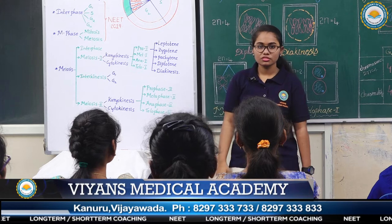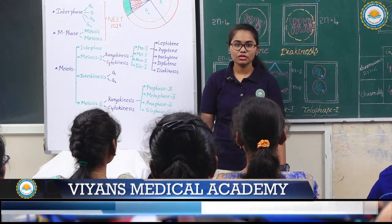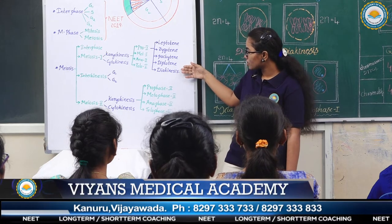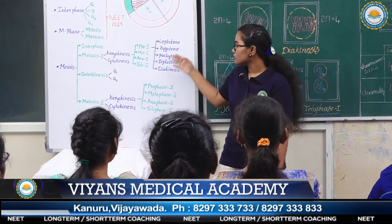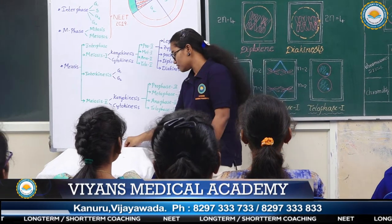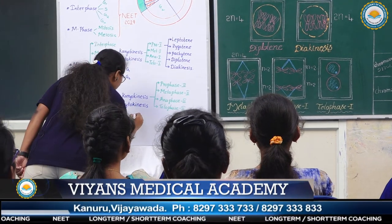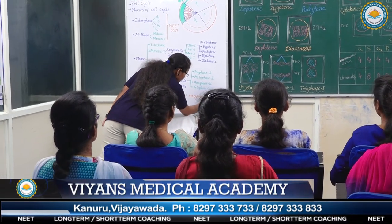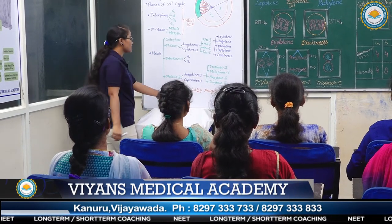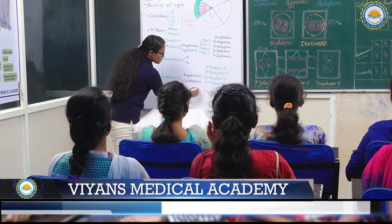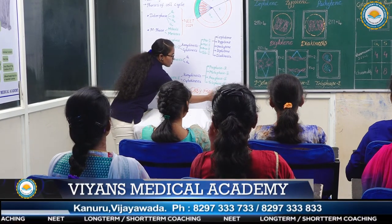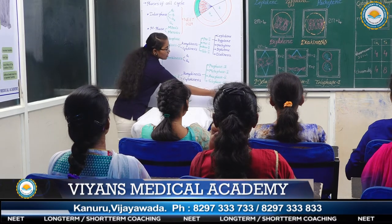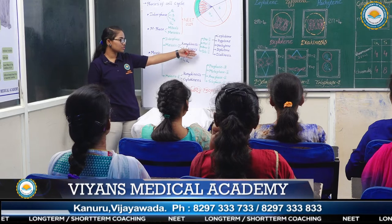Prophase 1 of meiosis is typically longer compared to the prophase of mitosis. Prophase 1 contains 5 subphases: leptotene, zygotene, pachytene, diplotene, and diakinesis. Do you find it difficult to remember the correct sequence? Here is a keyword to help: 'Lazy people dip-dye' — that is, Leptotene, Zygotene, Pachytene, Diplotene, and Diakinesis. With this, you can easily remember the sequence of prophase 1.